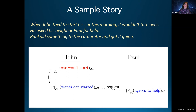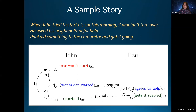Here's an example plot unit structure: 'When John tried to start his car this morning, it wouldn't turn over. He asked his neighbor Paul for help. Paul did something to the carburetor and got it going.' John starts in a negative event—his car won't start, so he's in a bad mood. He tries to solve the problem by asking Paul for help, which is a mental state or desire. Paul agrees to help, fixes the car—a successful plan—and so now John's in a positive state and the negative state no longer applies. These plot unit graphs get really big and complicated, but you can get a gist of how capturing what's going right or wrong for people is fundamental to understanding stories.